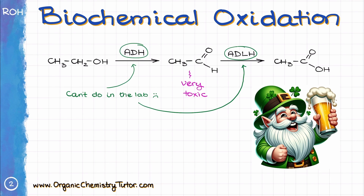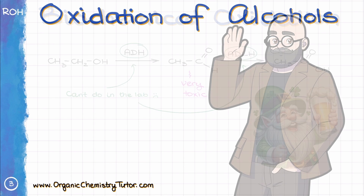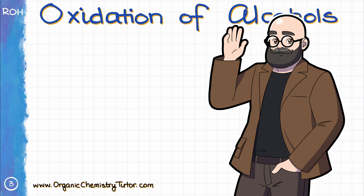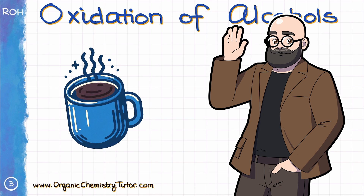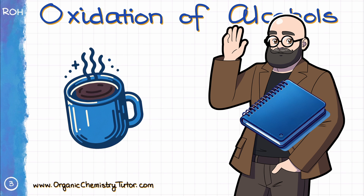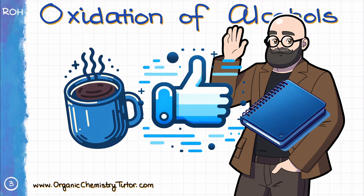In the lab, however, we do not have the luxury of the mobile bioreactor we'll call liver, stuffed with various enzymes to help us with the oxidation reactions. So we need some other techniques. My name is Victor, your guide to all things organic chemistry, and in this video I will tell you how we typically perform the oxidation reactions of alcohols in the lab. Grab your cup of coffee, a notebook to work through the examples with me, hit that like button for good luck on the test, and let's get started.